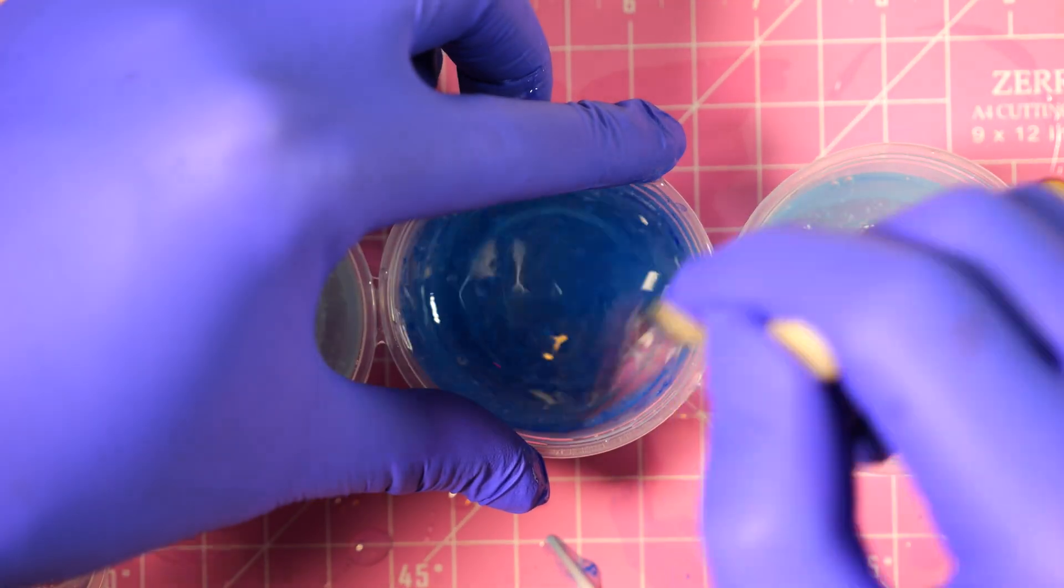Once fully set, I just popped it out of my mold. Honestly, seeing all these different shades of blues was super satisfying. So here are the seven colors that we made.